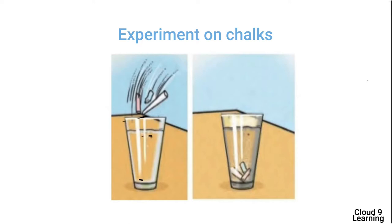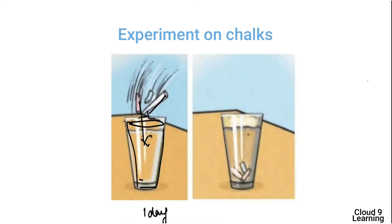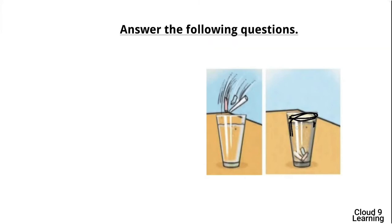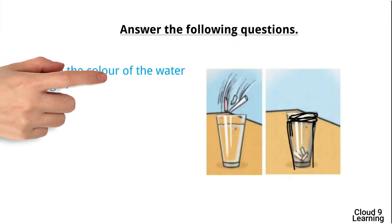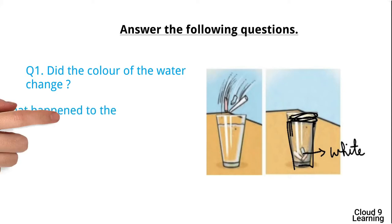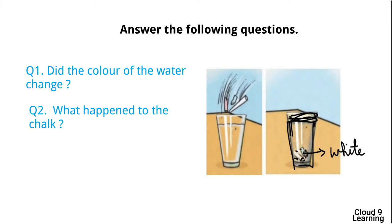First, we will see the experiment on chalks. Chalk is made up of a type of limestone. Take a glass of water, put some pieces of chalk in it, and leave it for one day. On the next day, observe what has happened. Did the color of the water change? Yes, the color of the water has changed to white. The pieces of chalk are dissolved in water.